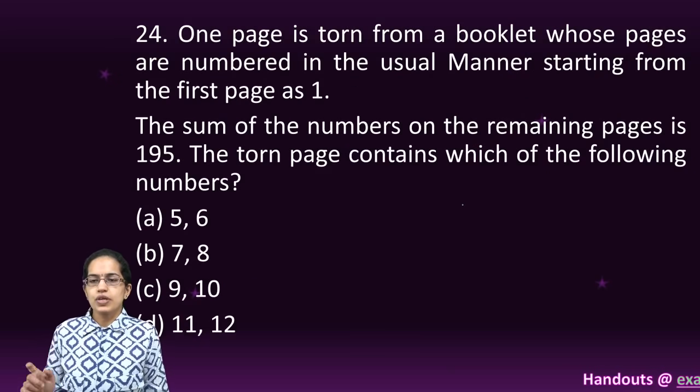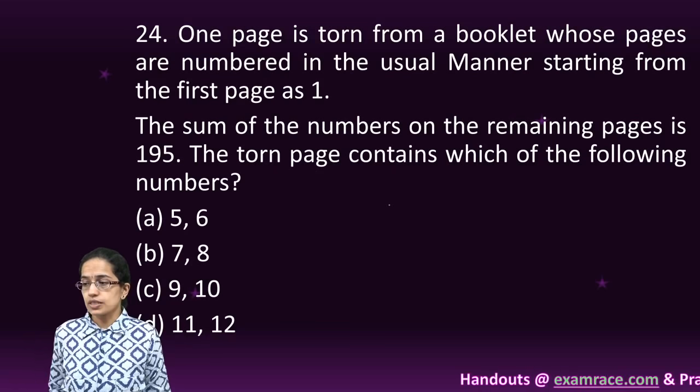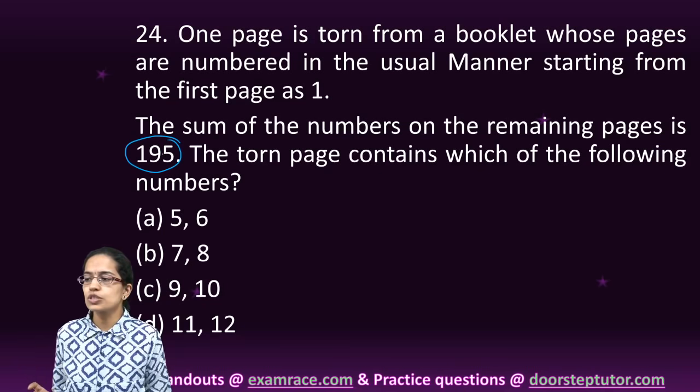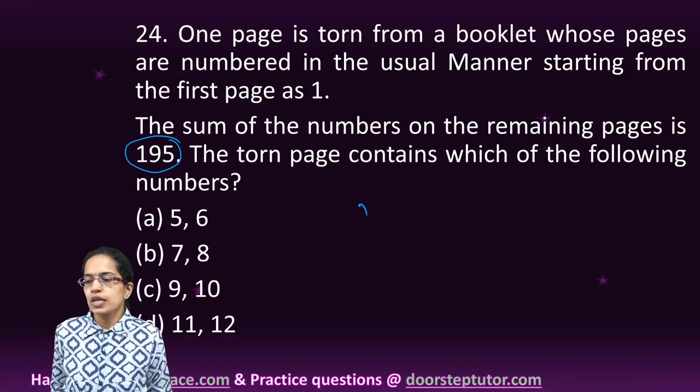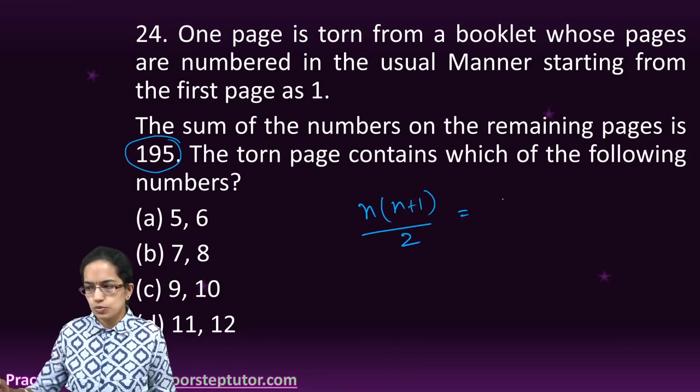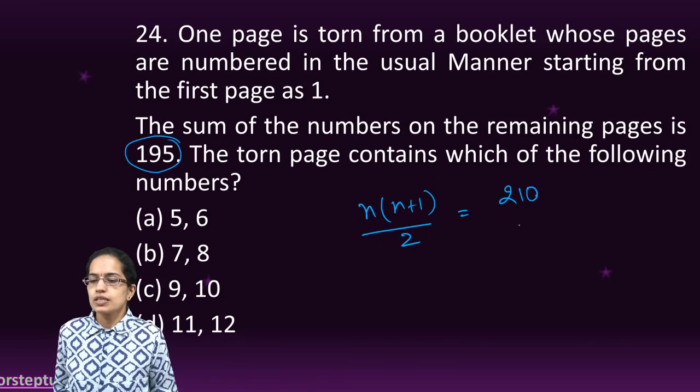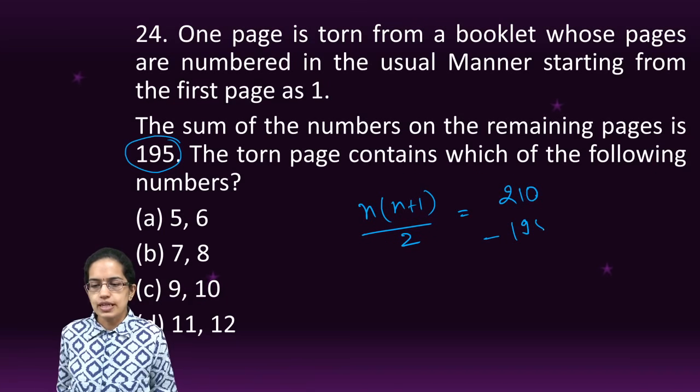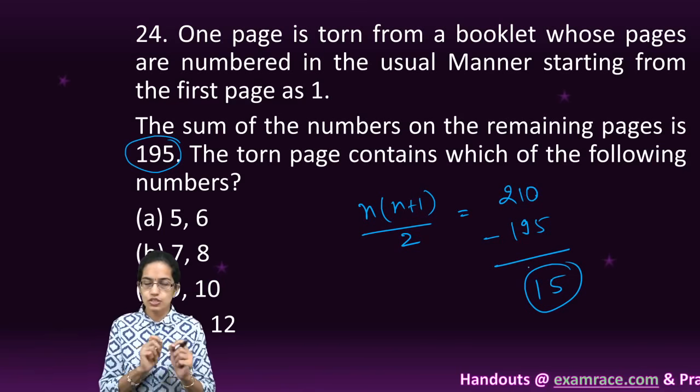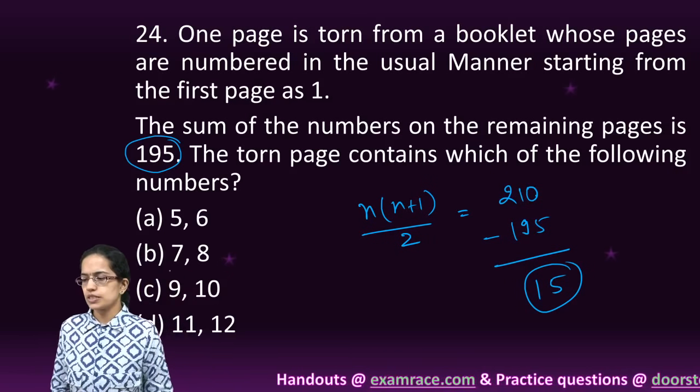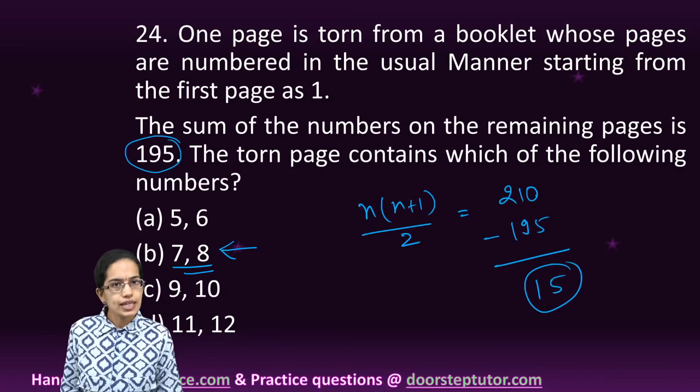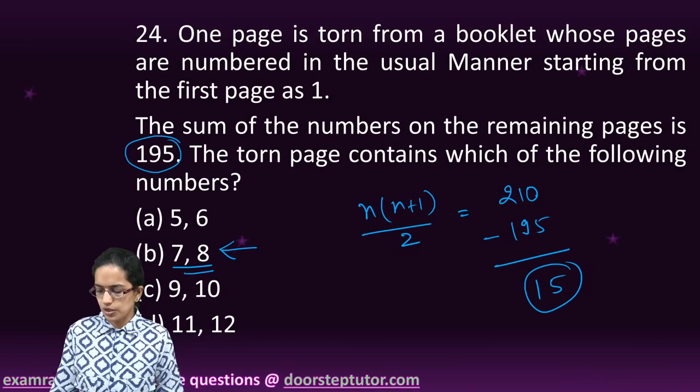In this question we have to find out the arithmetic progression. The value should be the closest to 195. Now n into n plus 1 by 2, the closest value to 195 is 210. Now 210 minus 195 gives you 15, that means the two pages which are torn, the sum of those two pages should be 15. So those pages would be 7 and 8.